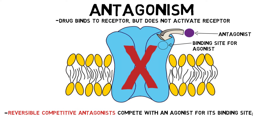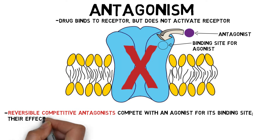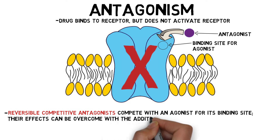Reversible competitive antagonists frequently unbind and rebind to receptors. An agonist can replace the antagonist while it is unbound, allowing the antagonist's effects to be overcome with the addition of more agonist.